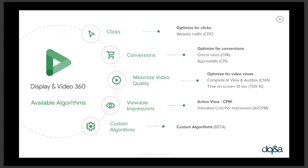Automation is always a nice topic. There are plenty of algorithms in DV that you can use for further optimizing your campaign — giving the system its freedom by using machine learning. Familiar ones include optimizing on CPC and CPA. Recently, a few nice ones have been added: maximizing video quality, viewable impressions — really valuable for branding campaigns — and there are custom algorithms as well, so if you have a particular need you can make a certain combination and explore that.